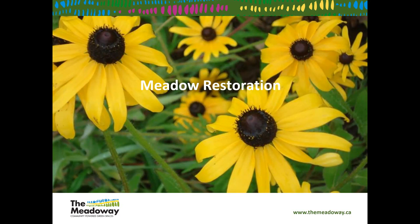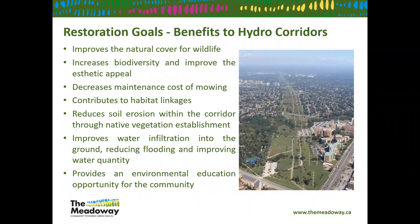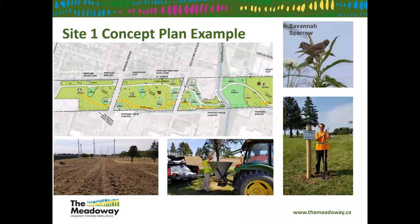Starting with our goals: one big one is improved natural cover for wildlife. The corridor is 16 kilometers long with a variety of ravines breaking it up — a really amazing linear corridor that will connect to the ravine system, increase biodiversity, and improve the aesthetic appeal of the area. A big one is reducing mowing — Corey touched on how many times the site was mowed and the carbon footprint associated with that. Meadow restoration with paths and trails, plus allowing roots to store water, will significantly improve carbon sequestration and hydrological function.